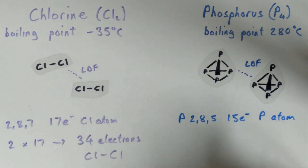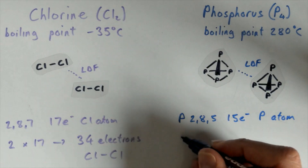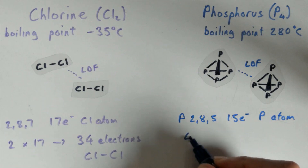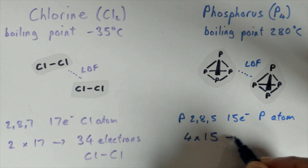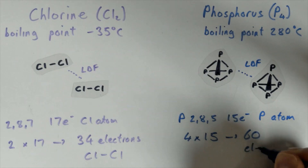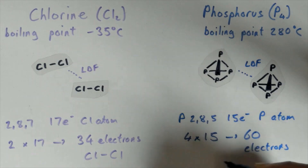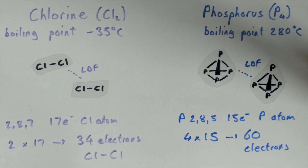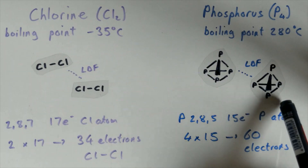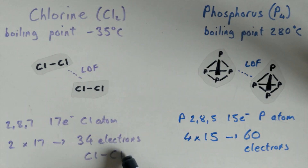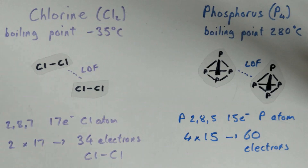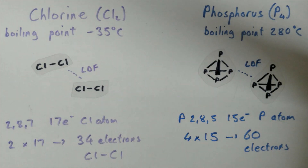In a phosphorus molecule, there are four atoms. Phosphorus has the electron arrangement 2,8,5, giving 15 electrons per atom. So the total number of electrons is 4 × 15 = 60 electrons in that phosphorus molecule. Because the phosphorus molecule has 60 electrons and the chlorine molecule has 34 electrons, the phosphorus molecule will have stronger London dispersion forces. Therefore more energy is required to overcome those London dispersion forces, giving it a higher melting and boiling point and making it more likely to be a solid at room temperature.